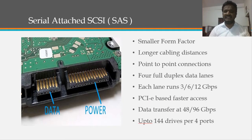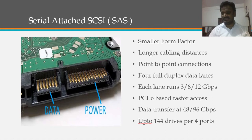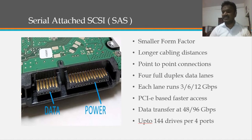The next storage interface is Serial Attached SCSI (SAS). It has a smaller form factor, longer cabling distance, and point-to-point connections. It has four full-duplex data lanes, each running at 3, 6, or 12 gigabytes per second. With four full-duplex lanes, it can reach up to 48 or 96 gigabits per second. It also supports PCIe-based communication for faster access, and can support up to 144 drives per four ports, allowing significant drive expansion.